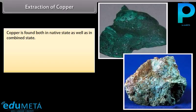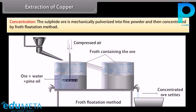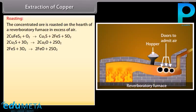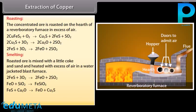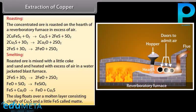Extraction of Copper: Copper is found both in native state and in combined state. Its main occurrences are as sulphides, oxides, and carbonates. The important steps are: concentration — the sulphide ore is mechanically pulverized into fine powder and concentrated by froth flotation method. Roasting — the concentrated ore is roasted in a reverberatory furnace in excess of air. Smelting — roasted ore is mixed with coke and sand and heated in a water-jacketed blast furnace; iron sulphide is converted to oxide, which forms fusible slag of iron silicate. The slag floats over a molten layer of Cu₂S and FeS called matte.